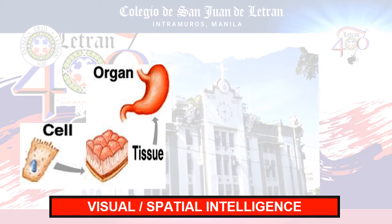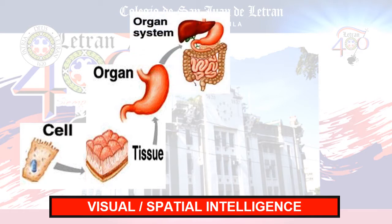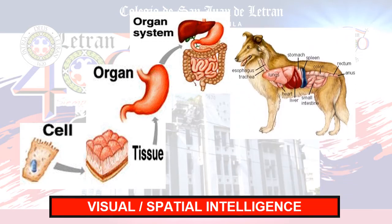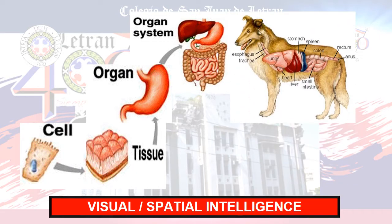The stomach is composed of a group of tissues. Then, we have organ system, such as the digestive system, which is composed of a group of organs. Then, we have organism, which is composed of a group of organ systems.